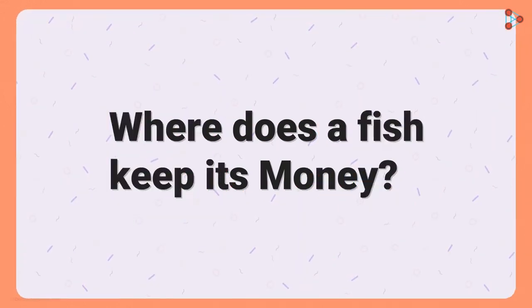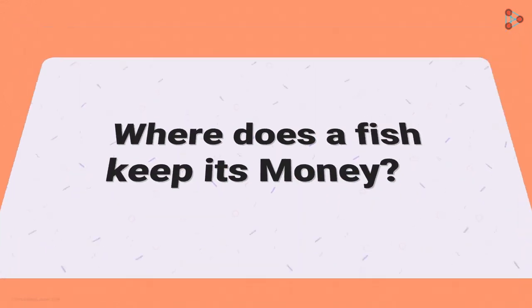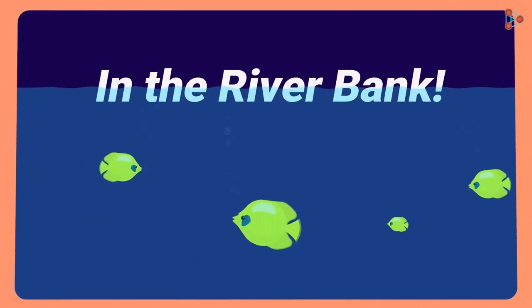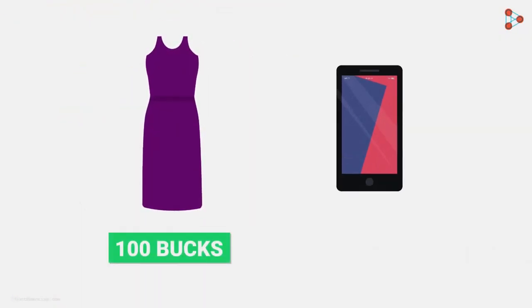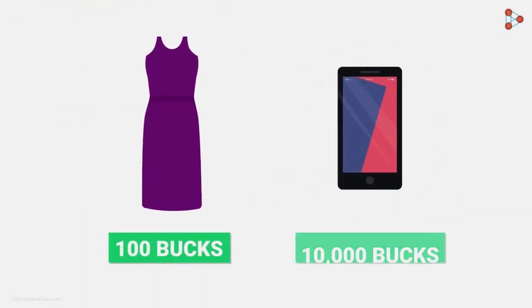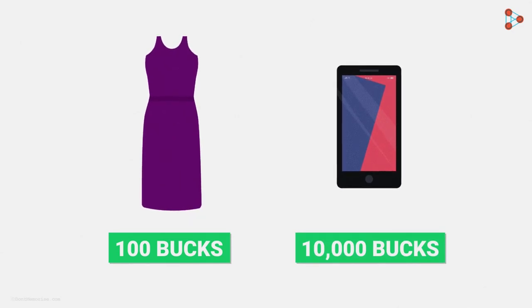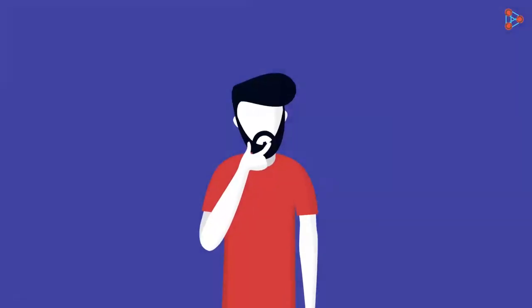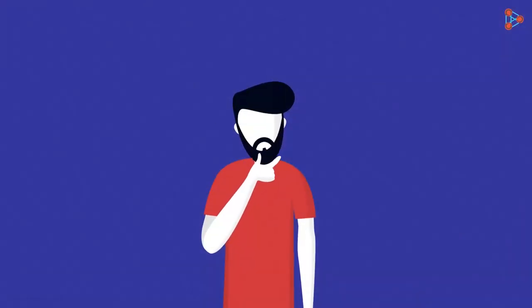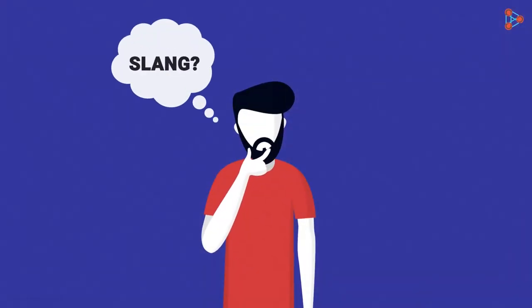Where does a fish keep its money? In the river bank. This dress costs a hundred bucks. This phone costs 10,000 bucks. We usually hear people describing money as bucks, but ever wondered how the slang for money originated?